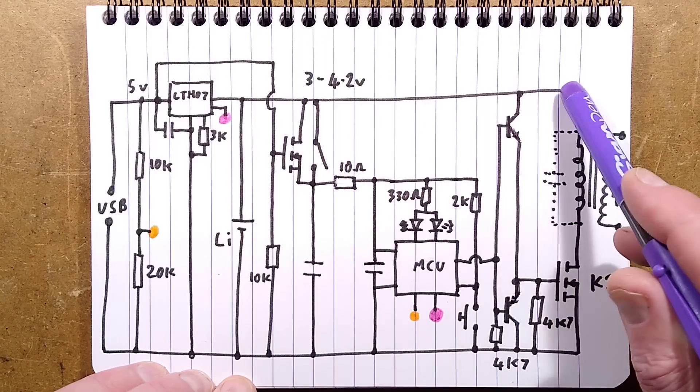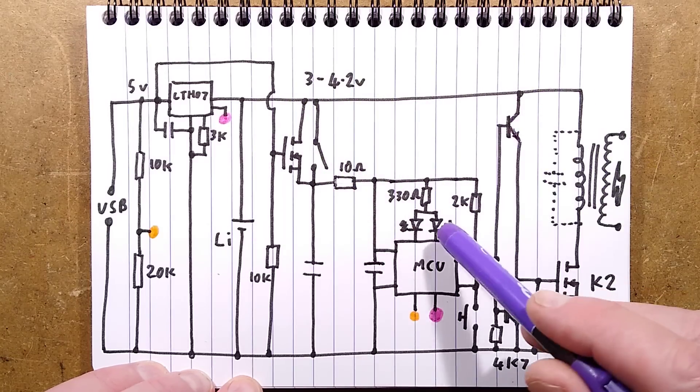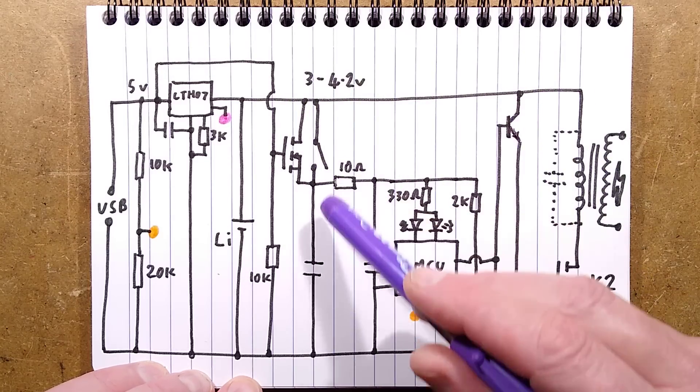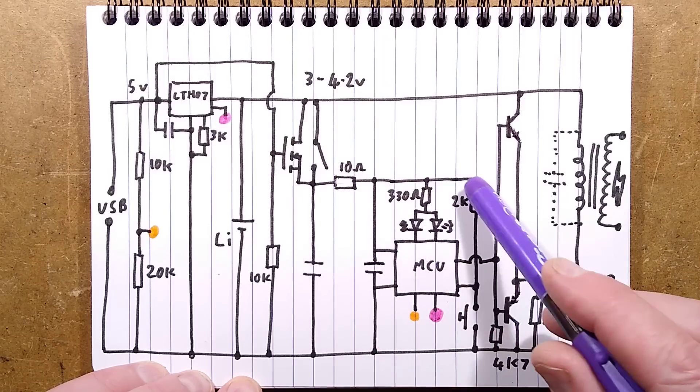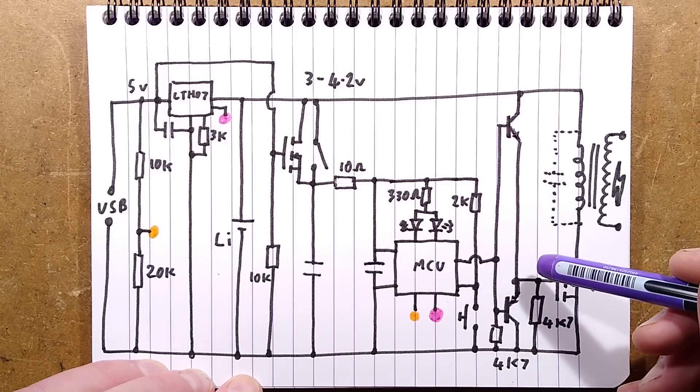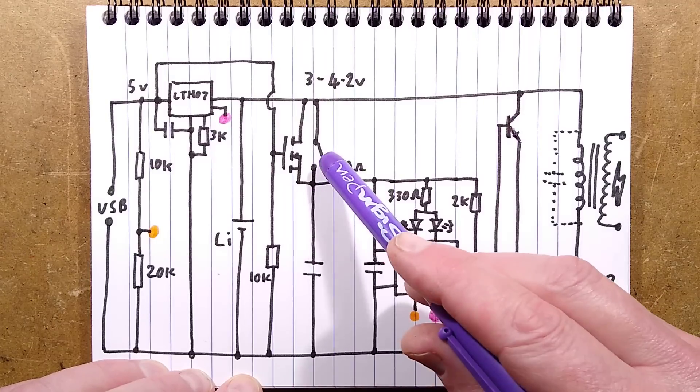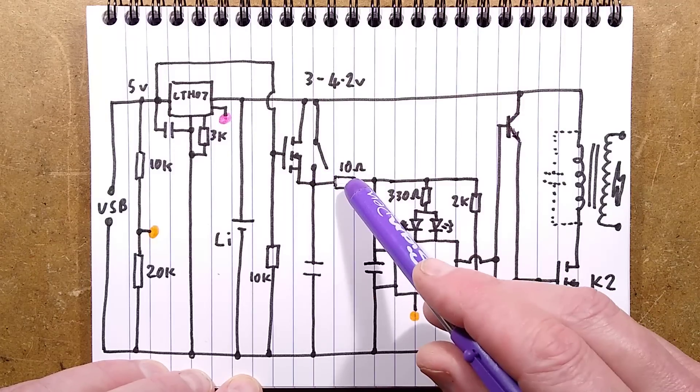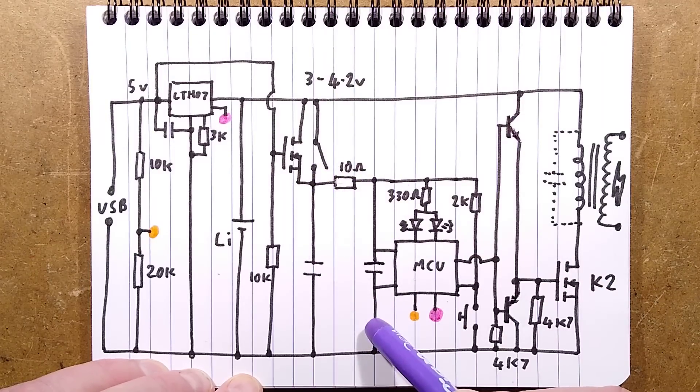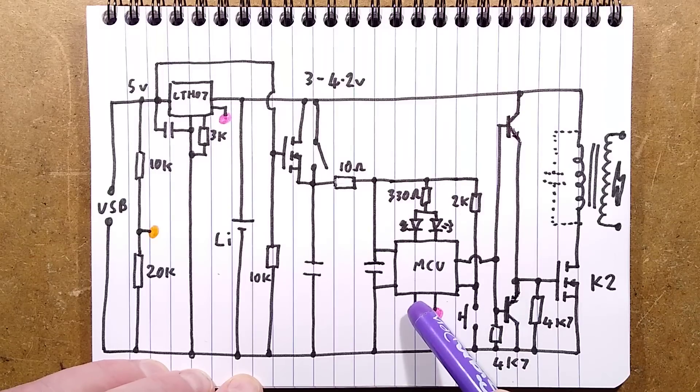Here's the USB charge port that charges the lithium cell via an LTH07. Very classic circuitry with a 3K resistor to set the charge current and it switches off at 4.2 volts. The battery powers all the rest of the circuitry. For isolation, there's a switch that disconnects the microcontroller to save power.